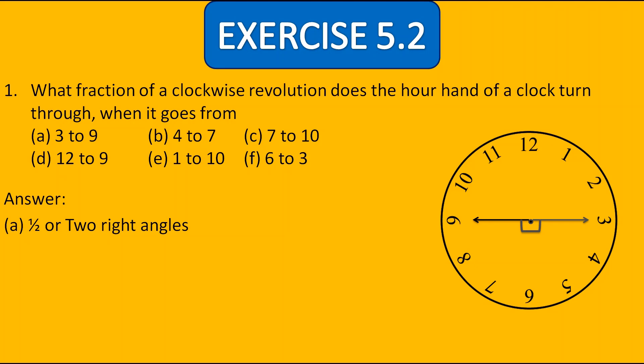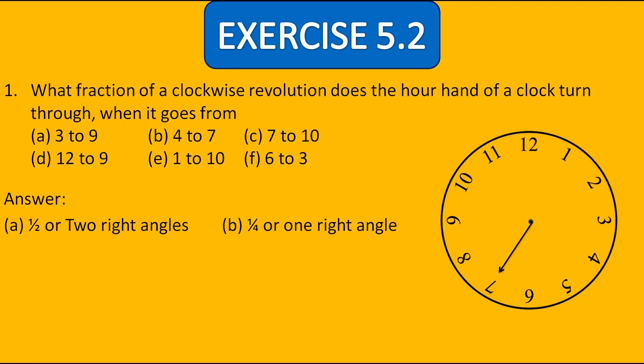In the next part, the hour hand was on 4 and now it reached at 7. Here it is clearly making one right angle, which means it is making one fourth of a revolution. So the answer for B is one fourth, or we can say one right angle. Now in C, the hour hand was on 7 and it reached on 10. Here also it is making one right angle, or we can say one fourth of the revolution.